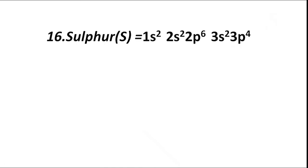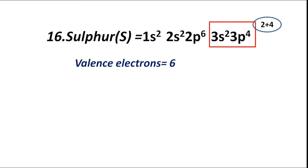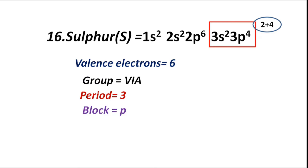Atomic number 16, sulphur (S), has electronic configuration 1s2 2s2 2p6 3s2 3p4. The valence shell is M, containing 3s and 3p sub-shells with total 2 plus 4 valence electrons, equal to 6. Hence group VIA or 6A. Highest coefficient is 3, therefore period third. Block P — valence electrons fill p sub-shell, hence block P. Valency is 2.